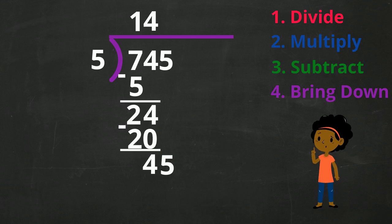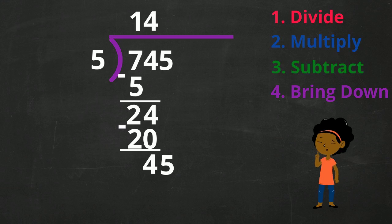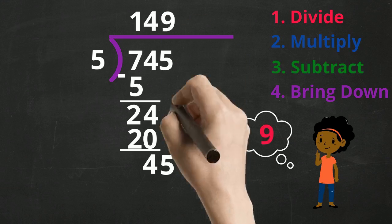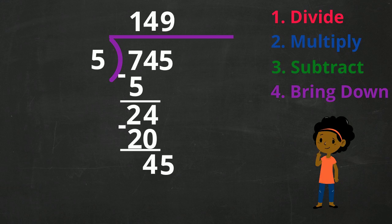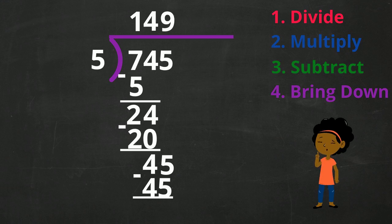We're almost there. Let's repeat these steps one final time. Step 1: Divide. How many times does 5 go into 45? From our division tables, we know 5 goes into 45 nine times. Step 2: Multiply. If we multiply 9 times 5, our answer is 45. Step 3: Subtract. We then subtract 45 from 45, and it leaves us with 0. Since there are no more digits left in our division equation, we're done.